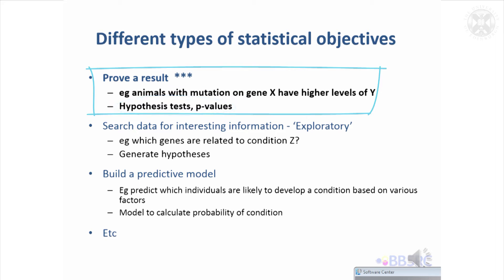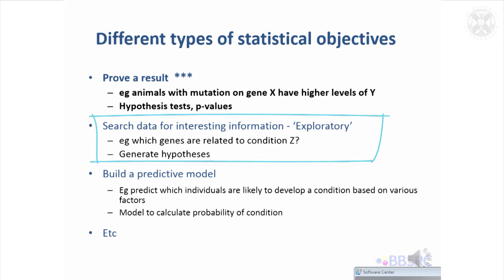The p-value will tell you if you've proved your result with statistical significance or not. However, it's worth realising that there are other things you might want to do with data. You might simply want to search your data for interesting information rather than prove a result definitively. For example, you might be looking for interesting genes — having measured gene expression for tens of thousands of genes — to see if any are interesting and then do more experiments with them. So that's more about generating hypotheses rather than proving something beyond reasonable doubt.